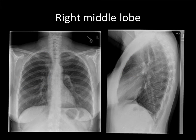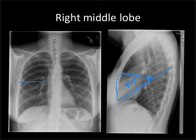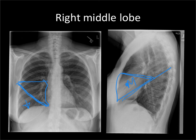Last but not least is my favorite lobe — the right middle lobe. Drawing our fissures in, there's only one little space left in our 3D jigsaw puzzle. This will be our right middle lobe on the lateral radiograph. On the frontal radiograph, the right middle lobe projects as a triangle. If you look at any examples of right middle lobe pneumonia you'll see this — it fills in those two lines, with the oblique fissure shown in tangent. Note that the right middle lobe will abut the right heart border, but it will not abut the right hemidiaphragm — that is the prerogative of the right lower lobe. Hopefully you now have a good understanding of the lobes of the lung on a chest x-ray.